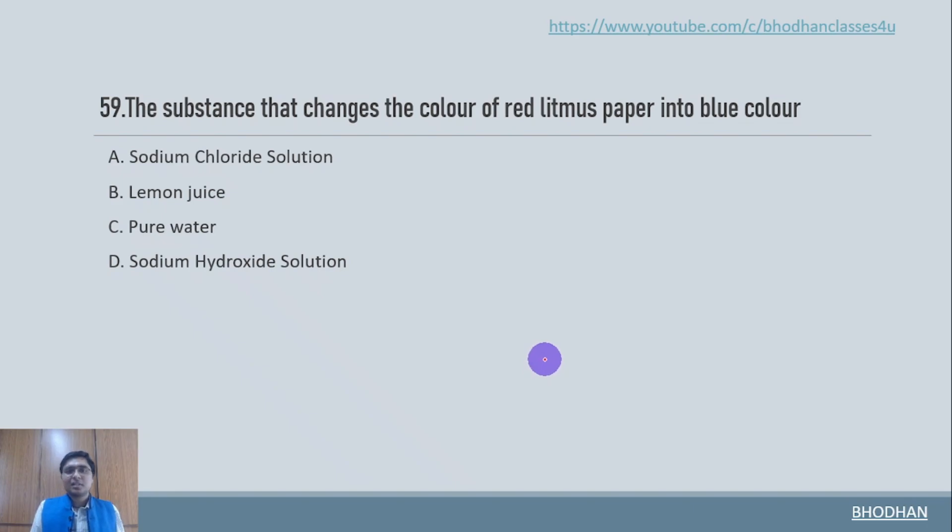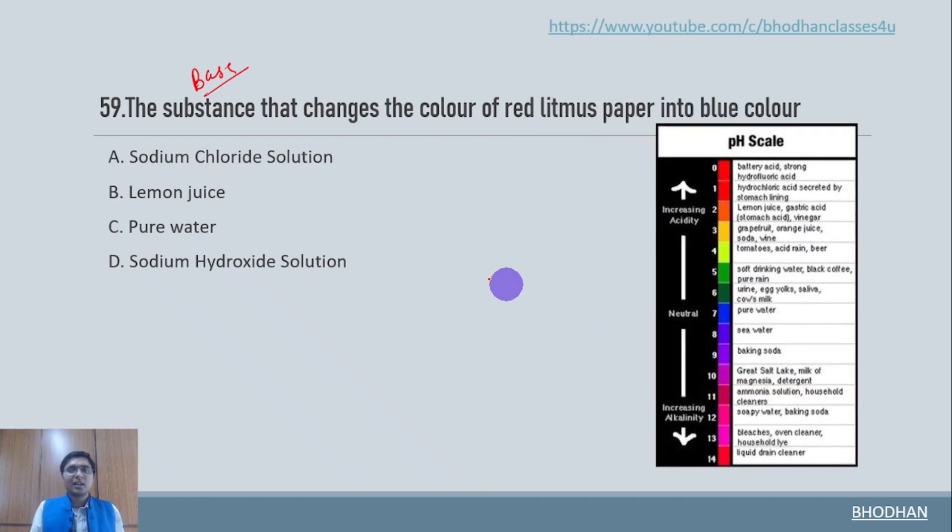The substance that changes the color of red litmus paper into blue. So now those substances which are basic in nature are going to convert the red litmus paper into blue color. So if you see the pH scale, we understand that sodium chloride is basically neutral.